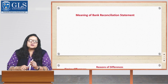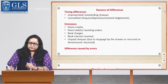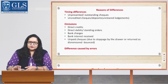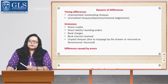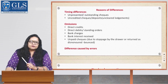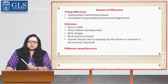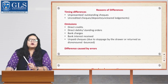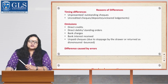Now let us discuss the reasons for differences. There are majorly three reasons: timing differences, omissions, and differences caused by errors. Timing differences are caused by time lag in the receipt of information or recording of a transaction between the bank and the firm or business, such as unpresented checks or outstanding checks, uncredited checks, and deposits or uncleared documents.